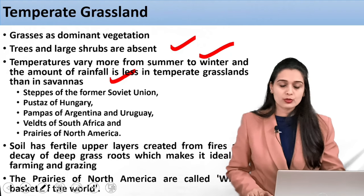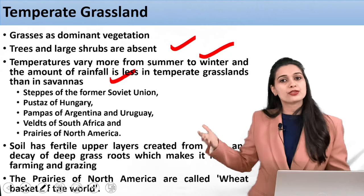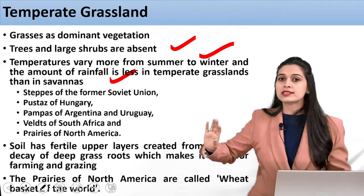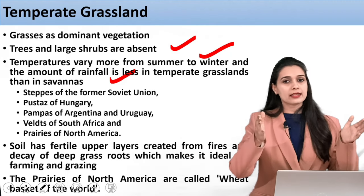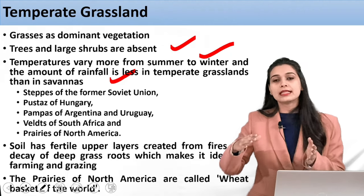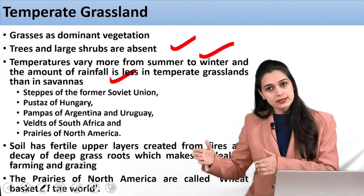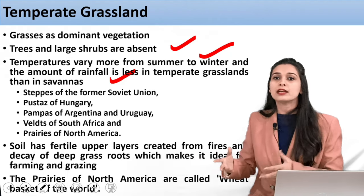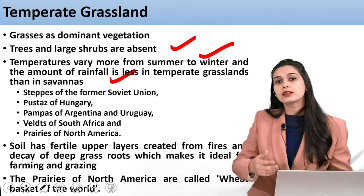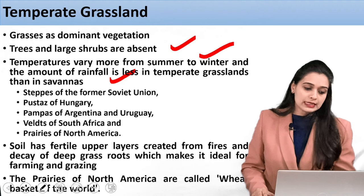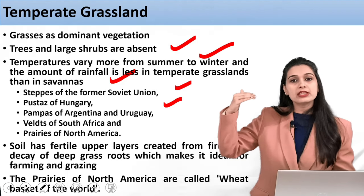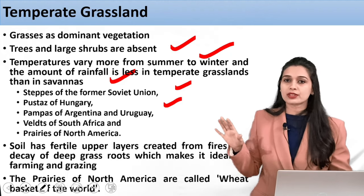Temperatures vary more from summer to winter, and the amount of rainfall is less in temperate grasslands compared to savannas — meaning very few trees. As rainfall decreases you move from forest to grassland, and with even lesser rainfall you move towards desert areas. These temperate grasslands have different names in different countries: the steppes, the pustas, the pampas, and the veld.